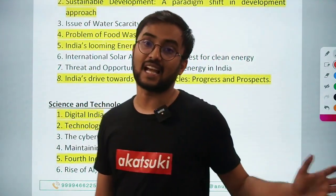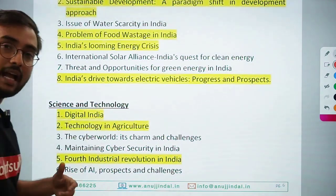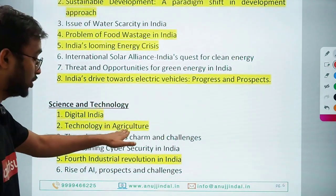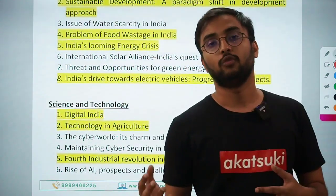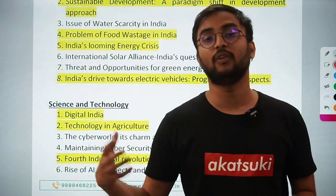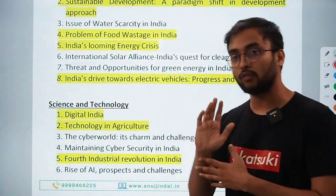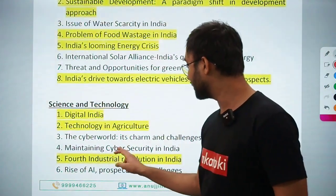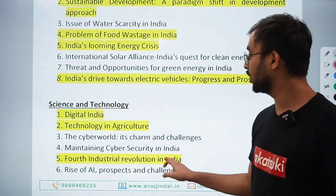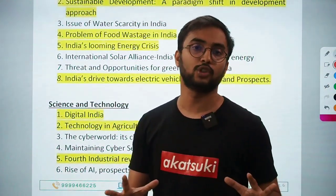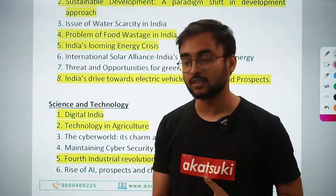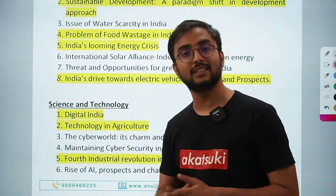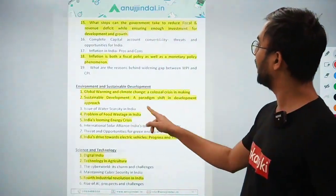The next macro topic is science and technology. Digital India — internet, AI, and digitalization is an important repeated theme. Technology in agriculture — apps like mKisan giving farmers information about cyclones and weather, any technology in agriculture essay could be asked. The cyber world: its charms and challenges. Maintaining cyber security — both are about cyber security. Fourth industrial revolution — dependent on AI and Internet of Things. Rise of AI: prospects and challenges — on similar lines as the fourth industrial revolution.